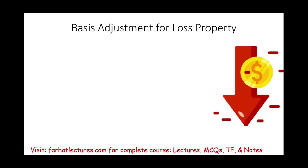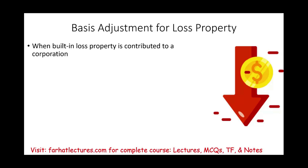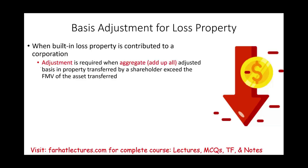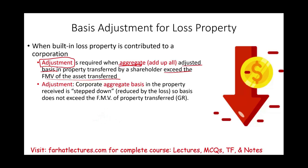Regarding basis adjustment for loss property: when built-in loss property is contributed to a corporation — meaning the property already has a fair market value lower than the adjusted basis — an adjustment is required. Specifically, when the aggregate adjusted basis of all property transferred exceeds the aggregate fair market value of all property transferred, the corporation's aggregate basis in the property received must be stepped down — reduced — so that the basis does not exceed the fair market value of the property transferred.